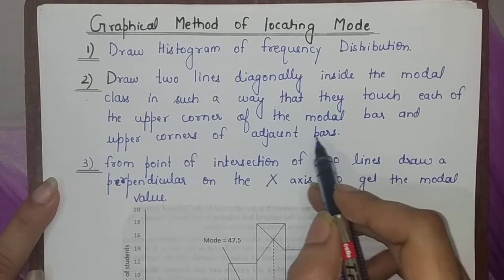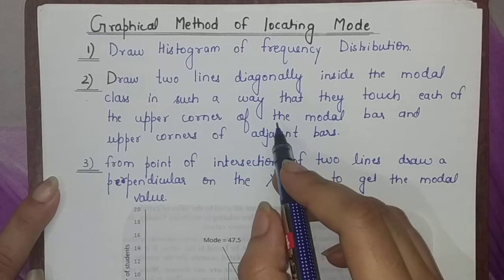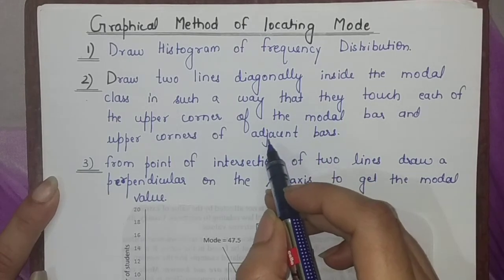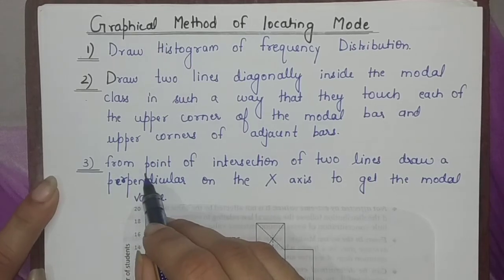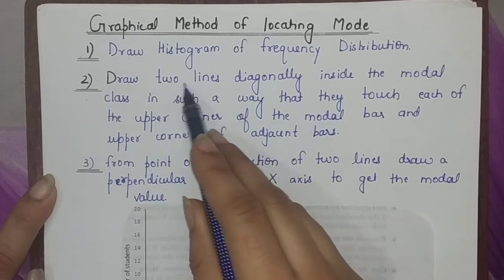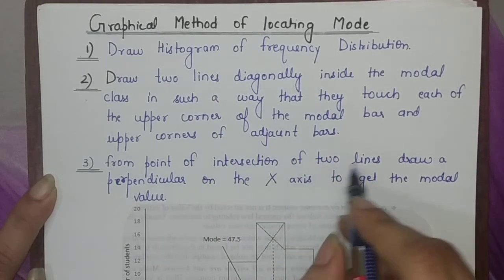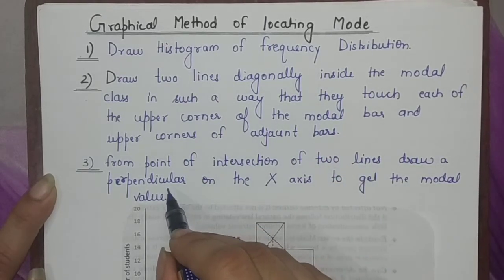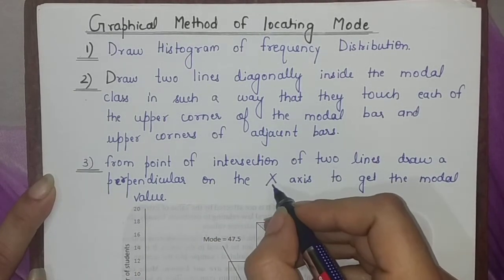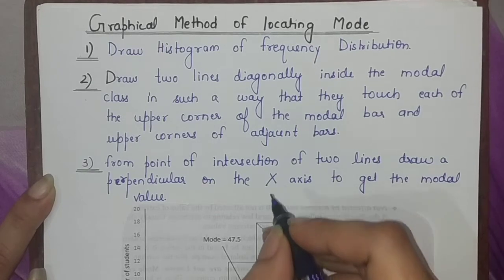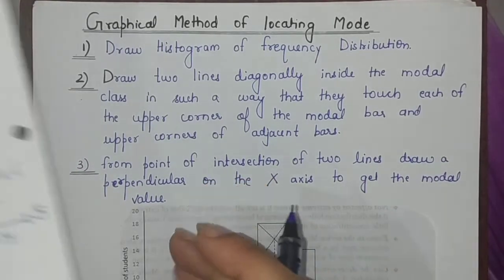The diagonal lines also touch the top corners of the adjacent bars on the left and right side. After doing this, where both diagonal lines intersect inside the bar, from that point you draw a perpendicular line down to the x-axis at a 90-degree angle. The value where this perpendicular line touches the x-axis is your mode.